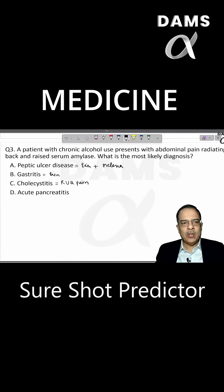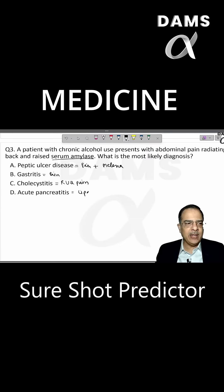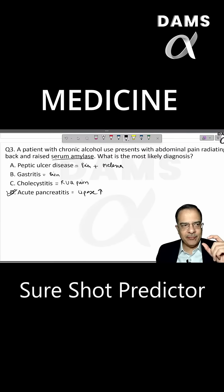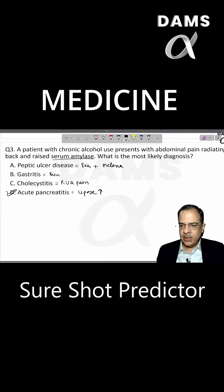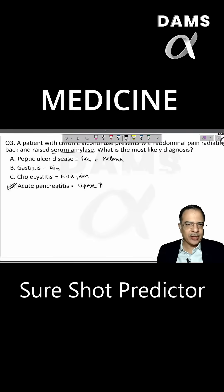Acute pancreatitis radiates to the back, and amylase will be importantly elevated, as well as lipase will be high. So the answer here is acute pancreatitis. This is a very important typical feature of acute pancreatitis, and this is an important question from the GIT section.